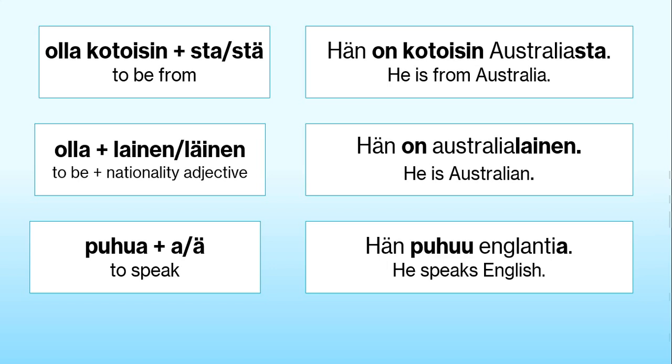Let's read these three sentences once again in Finnish. Please repeat after me if you want to practice your pronunciation. Hän on kotoisin Australiasta. Hän on Australialainen. Hän puhuu Englantia.